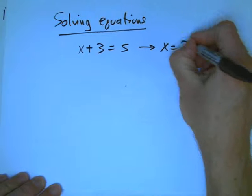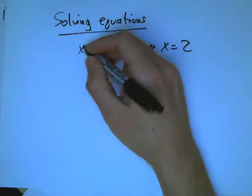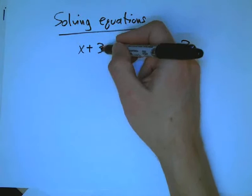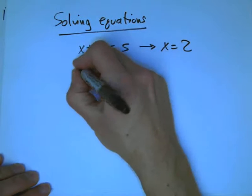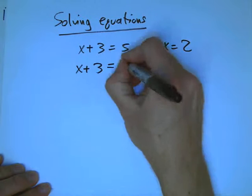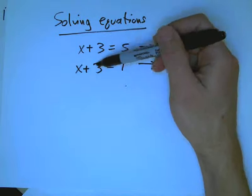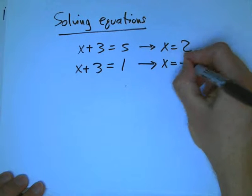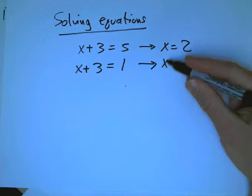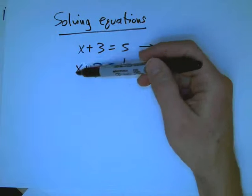If you have x plus 3 equals 5, then you don't need anything but whole numbers to solve that. If I have a mystery number of apples and I get 3 more apples and then I end up with 5 apples, I must have started with 2 apples. Grade school stuff. But as soon as you get to x plus 3 equals 1, that doesn't make sense with apples anymore. I have a mystery number of apples. I get 3 more and then I have 1 apple. It doesn't make any sense.